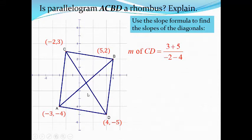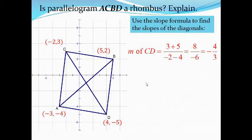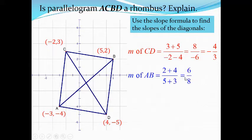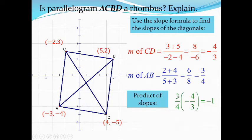Now let's find the slope of the other diagonal AB using the slope formula: (2 minus negative 4) over (5 minus negative 3) equals 6 over 8, or 3 over 4. Since the two slopes are opposite reciprocals — their product equals negative 1 — the two diagonals are perpendicular. Therefore, parallelogram ABCD is a rhombus.